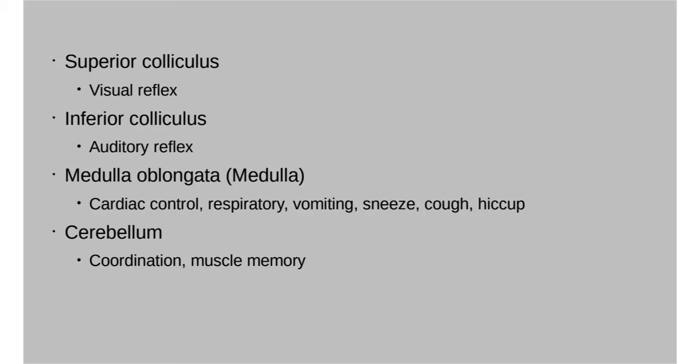Just beneath your cerebrum is a smaller structure that looks like a piece of cauliflower — your cerebellum, also divided into left and right cerebellar hemispheres. The cerebellum is halfway between the cerebrum and medulla oblongata in terms of function — it handles things you're not consciously thinking about doing but that are still voluntary. For example, when you walk down the hall, it's a voluntary action but you're not consciously thinking 'move my left leg, move my right leg' — your cerebellum handles that coordination.